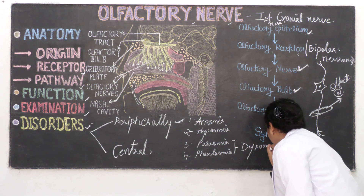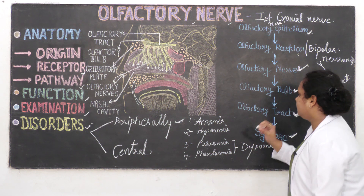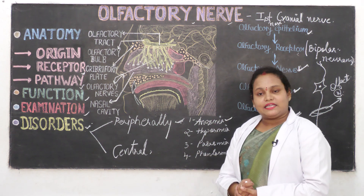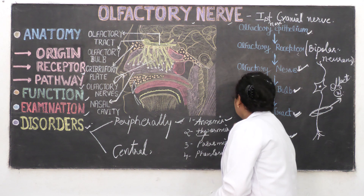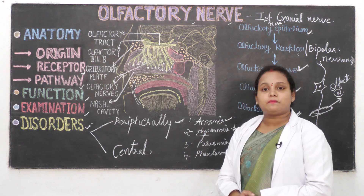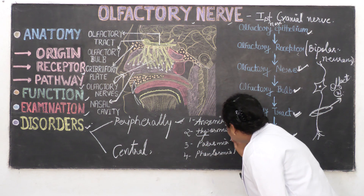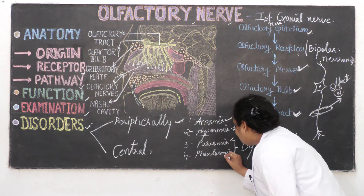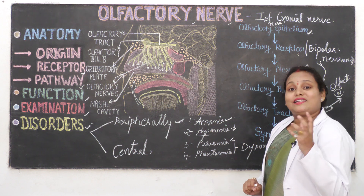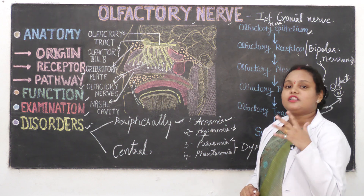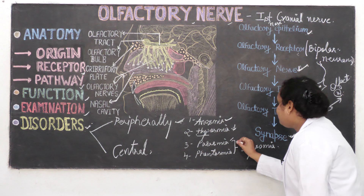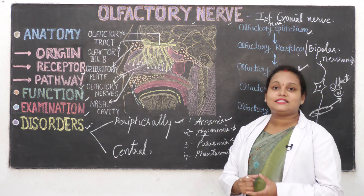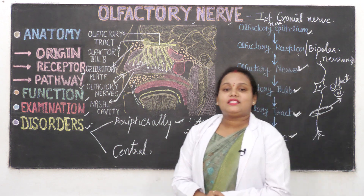Anosmia means complete lack of ability to smell. Hyposmia — as the word suggests, hypo means reduced ability to smell. Parosmia means distorted or changed smell. Phantosmia means odor hallucination — smelling something that is not actually present. Both parosmia and phantosmia come under the umbrella term dysosmia, which means distorted or disturbed smell.